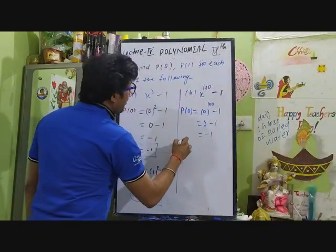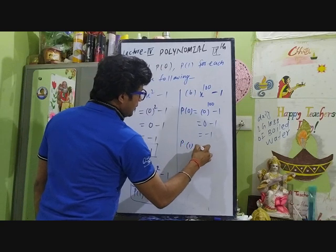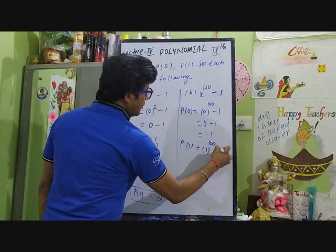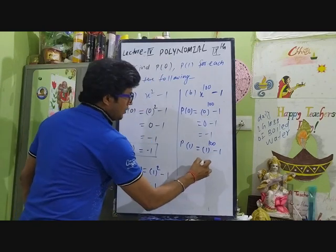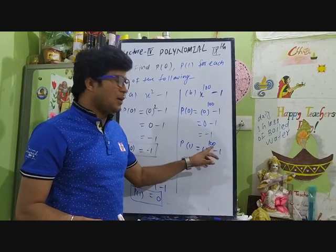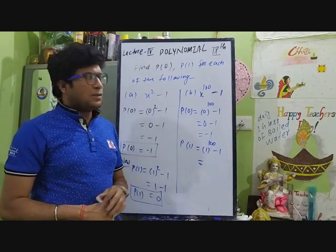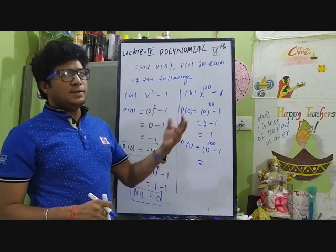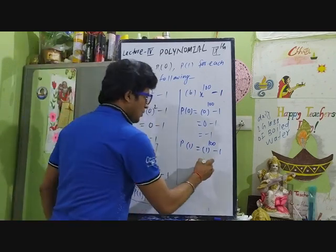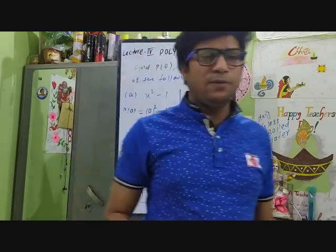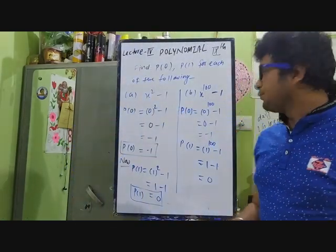Next, p(1) = 1^100 - 1. Since the power 100 is even, 1^100 = 1, so 1 - 1 = 0. Therefore, p(1) = 0.